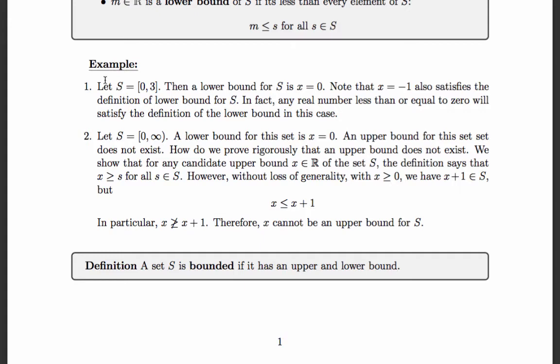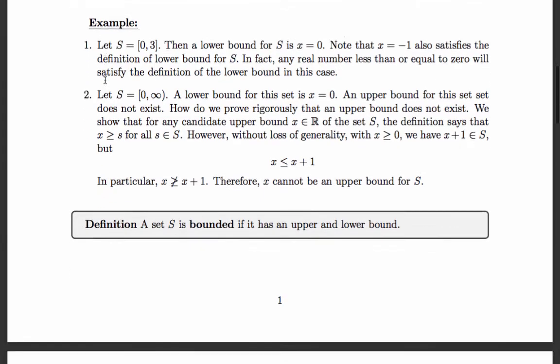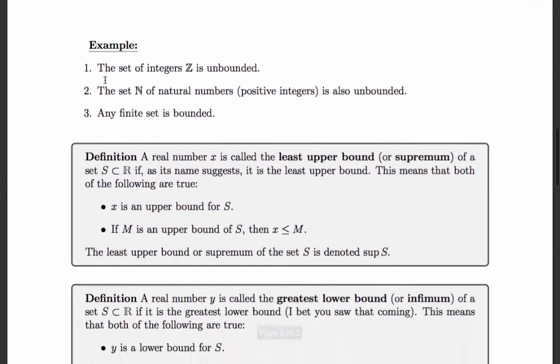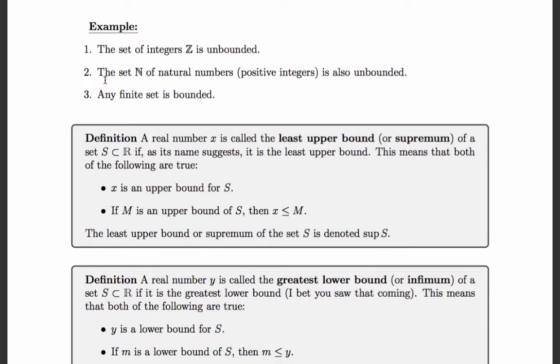We say a set is bounded if it has both an upper bound and a lower bound. So the first example is a bounded set. The second example is an unbounded set — even though it's bounded from below, it is not bounded from above. The set of integers is unbounded; I can always add 1 or subtract 1. The set of natural numbers is unbounded because I can always add 1. Of course, any finite set is bounded.